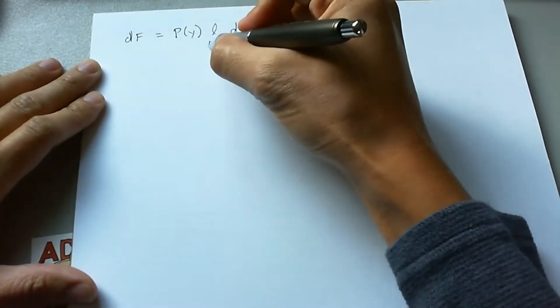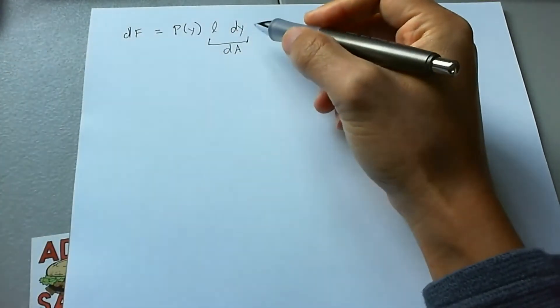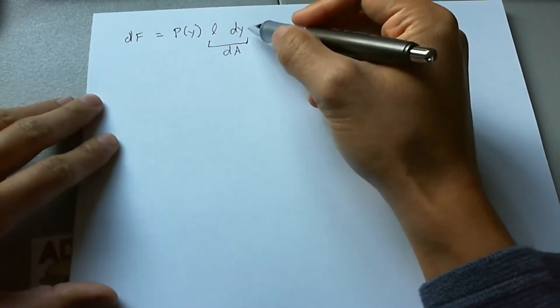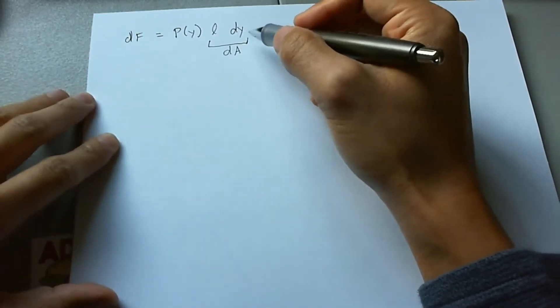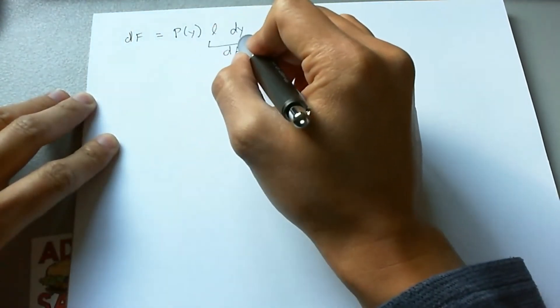So this is basically dA. One thing to note here is that dy is an infinitesimal piece of the area. It has nothing to do with the depth per se, but we will know that pressure does relate to the depth here.